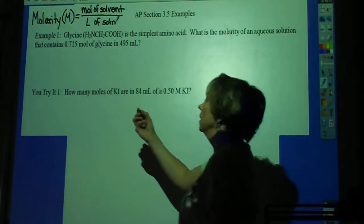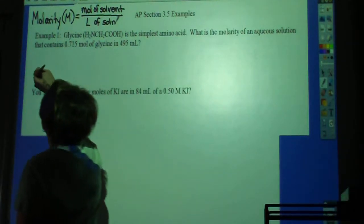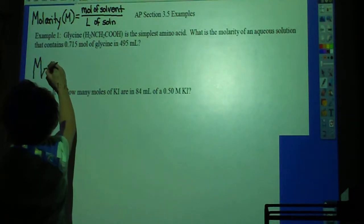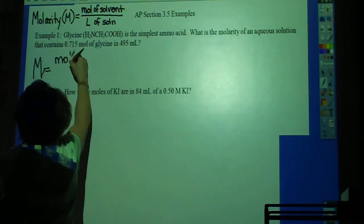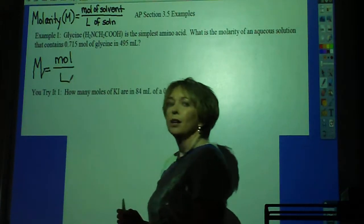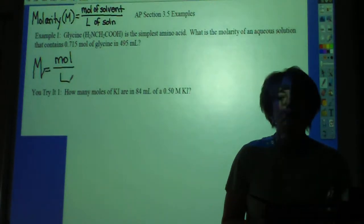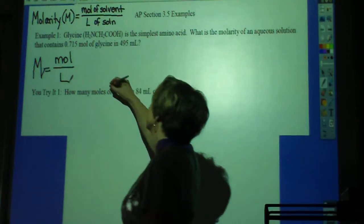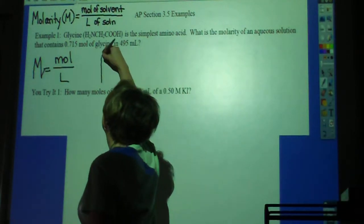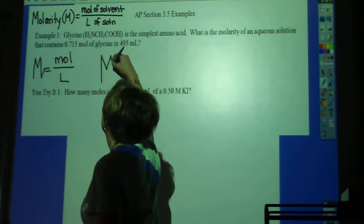Our formula is M equals moles over liters. So example one becomes incredibly easy for us. It says glycine is the simplest amino acid. What is the molarity? Clearly I'm solving for M.